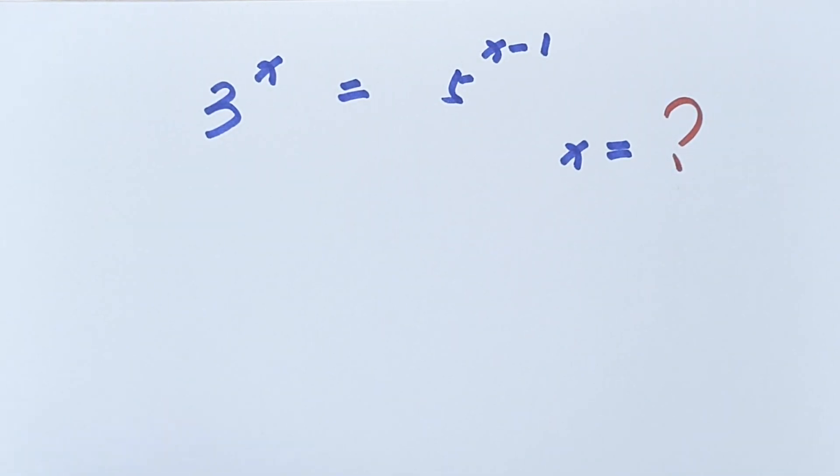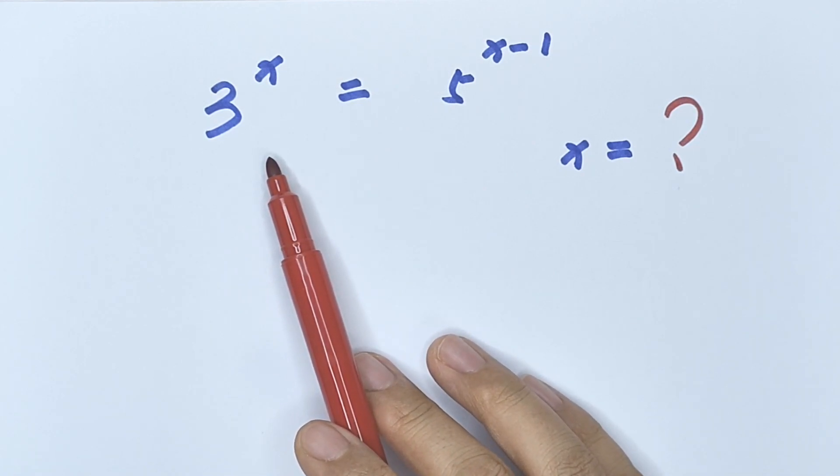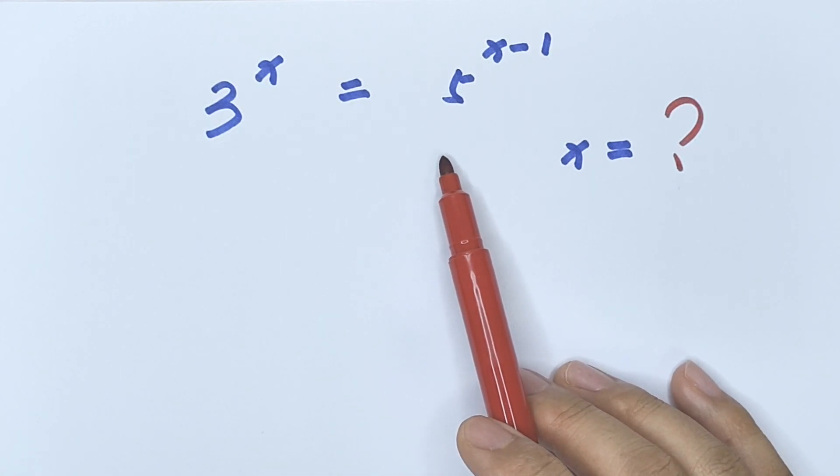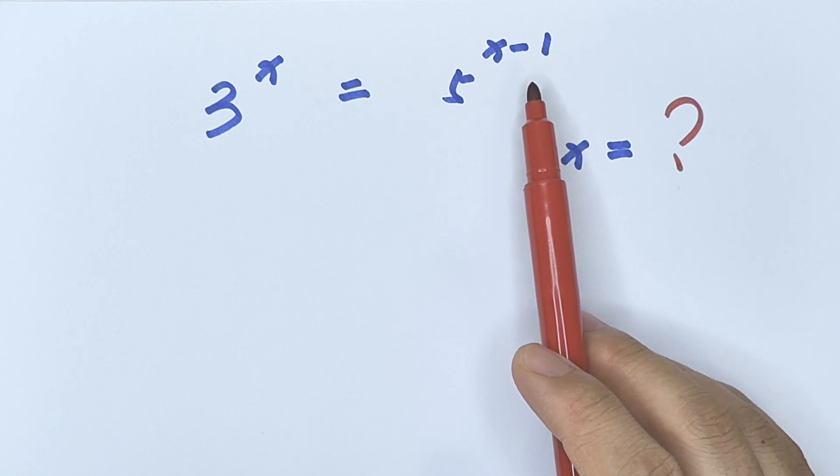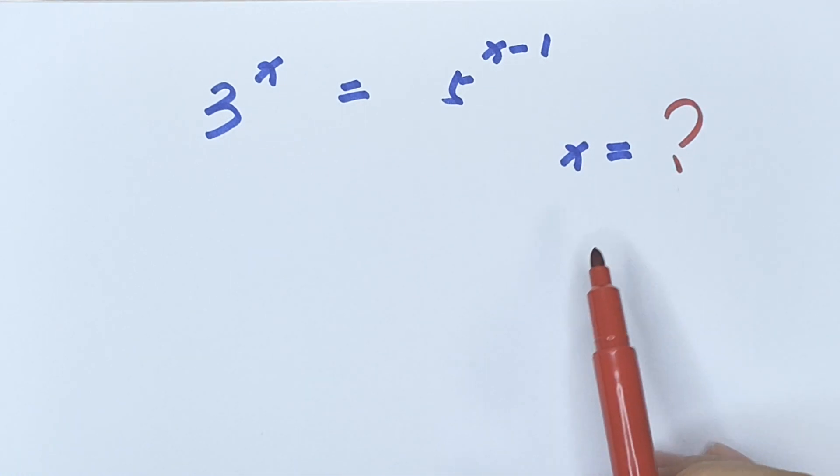Hello everyone, welcome to Math4U. How to solve 3 to the power of x equals 5 to the power of x minus 1. To find the value of x,